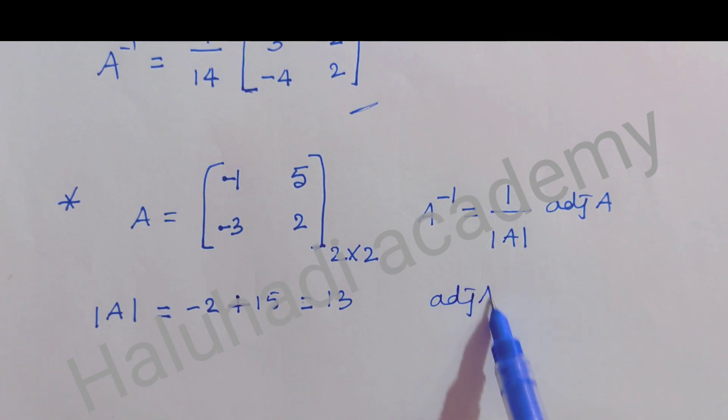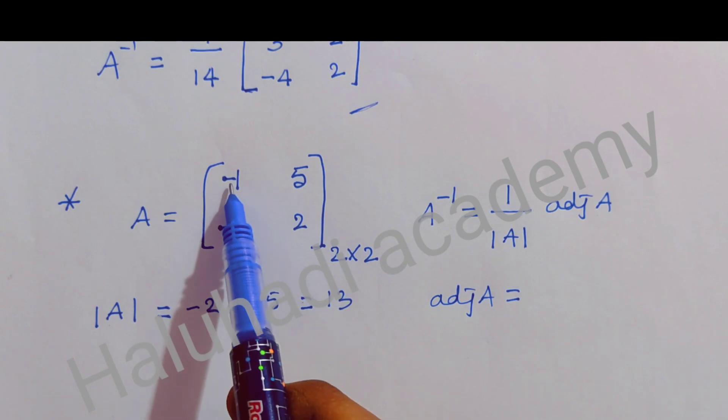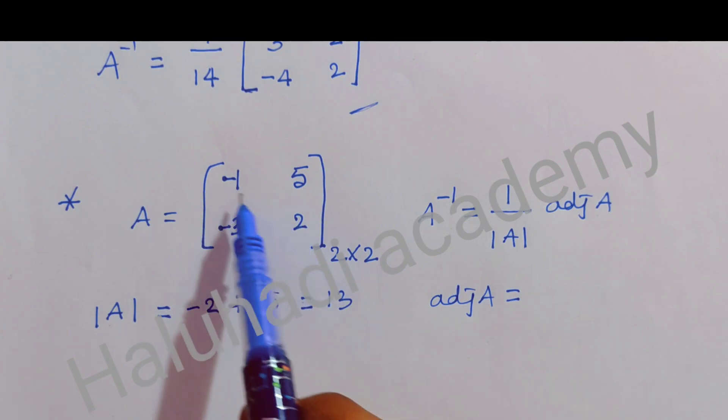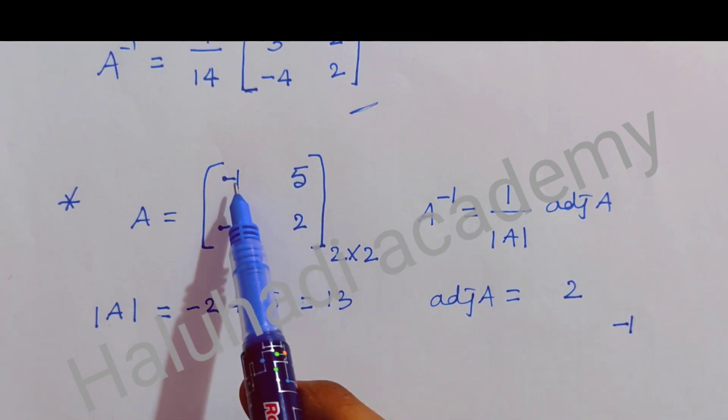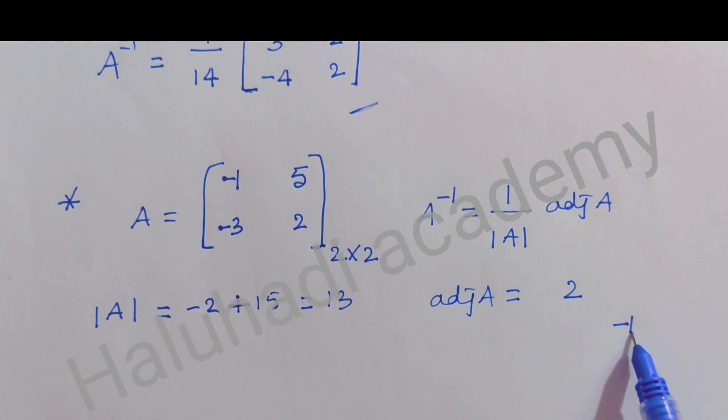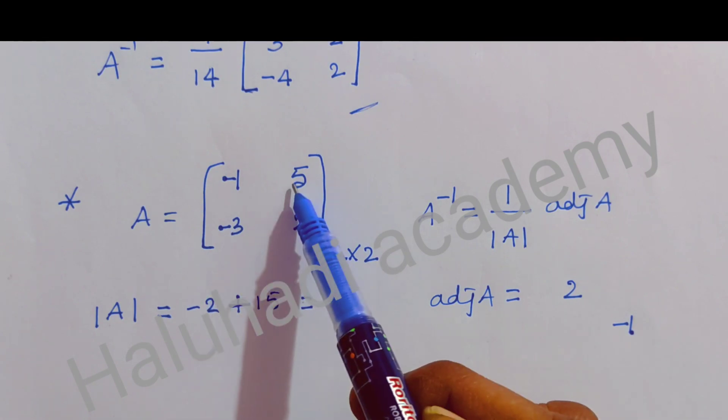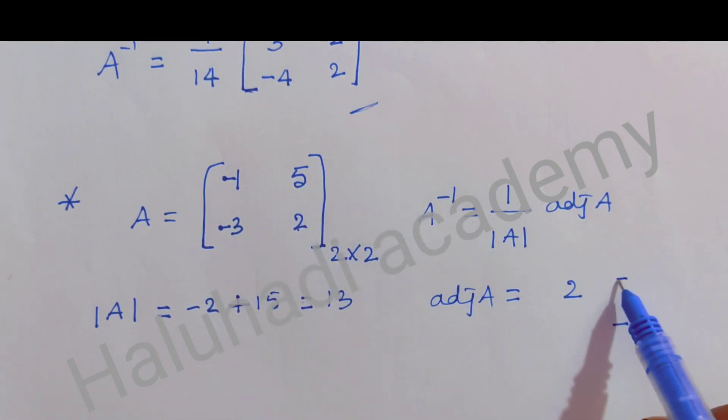Similarly, adjoint A equals - there's a simple trick: exchange the elements on principal diagonal. 2, -1 - so -1 comes here and 2 goes to the bottom. It becomes 5, 3. And here -3 becomes +3, and +5 becomes -5. Very simple trick. This is adjoint A.